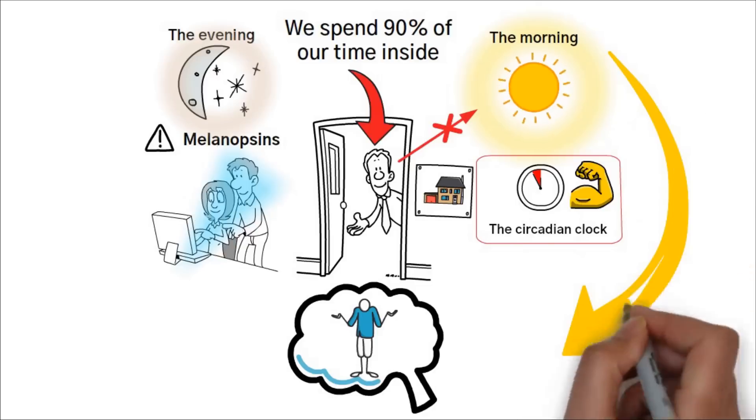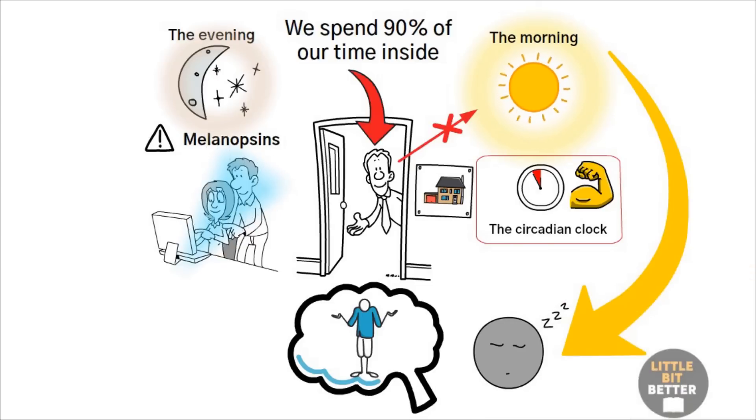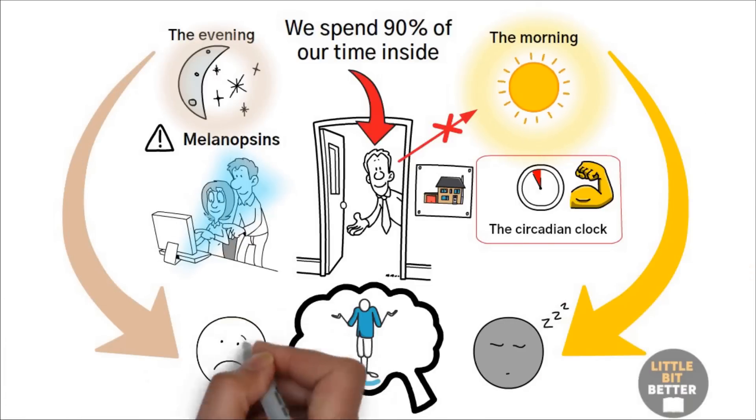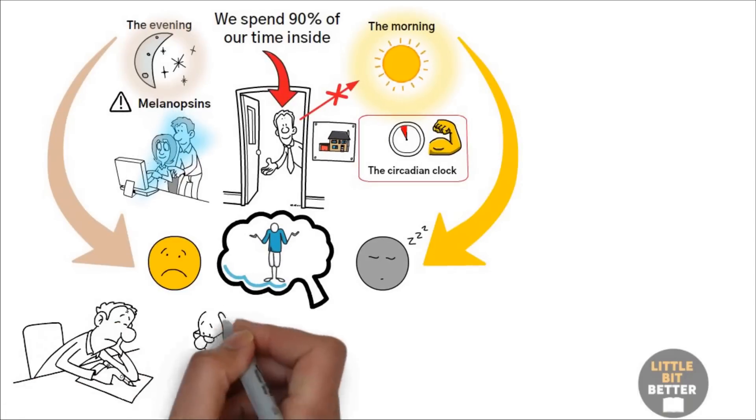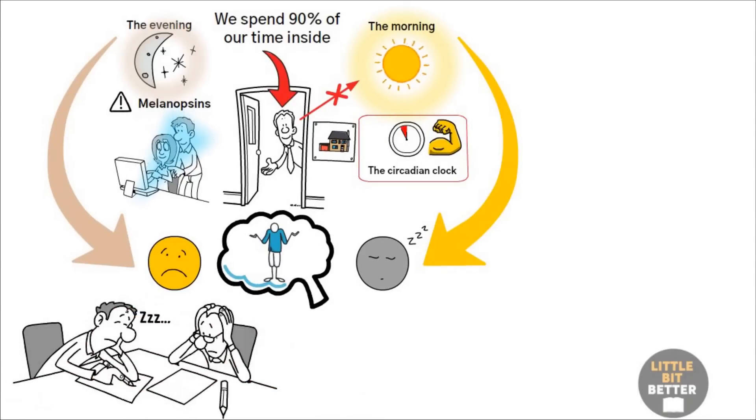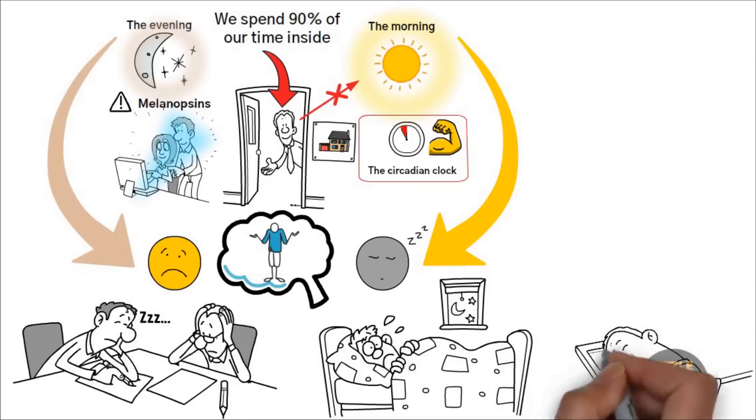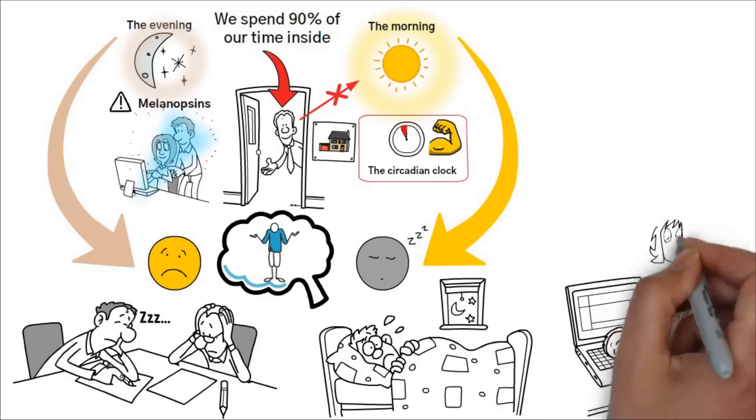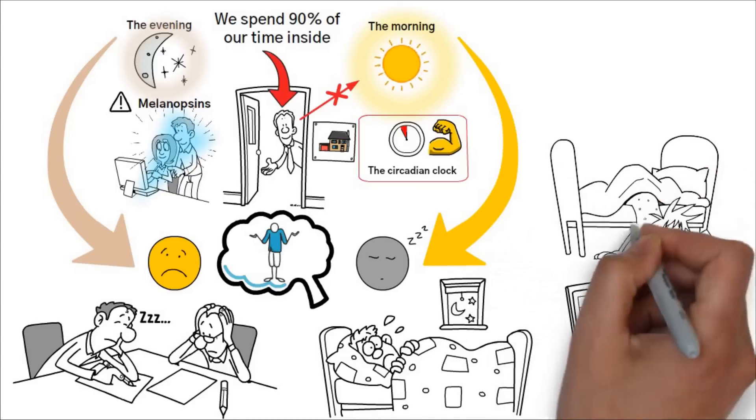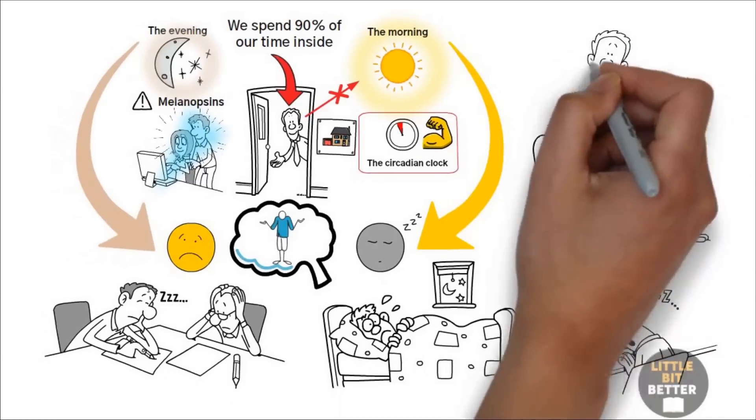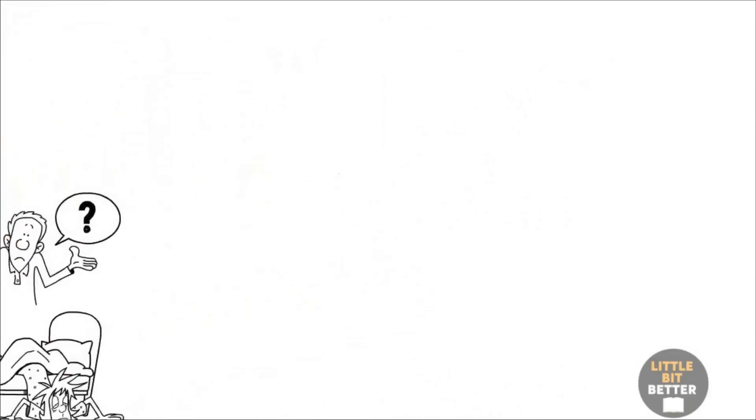When it is daytime, your brain thinks that it is nighttime. And when it is nighttime, your brain thinks that it is daytime. No wonder you feel sleepy and have no energy during the day. No wonder you can't fall asleep in the evening. No wonder you feel tired all day long. No wonder you wake up feeling exhausted. So how can you fix this and reset your circadian clock correctly? Here are nine tips.